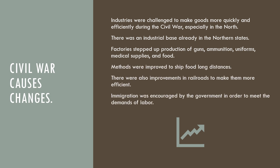Methods were also improved to ship food long distances — for example, sending food from Philadelphia to soldiers in Tennessee required more efficient strategies. One of the key improvements was with railroads, one of the main ways to travel in the mid-to-late 1800s. Immigration was also going to be encouraged by the government to meet labor demands as growing factories and industries spread across the country.